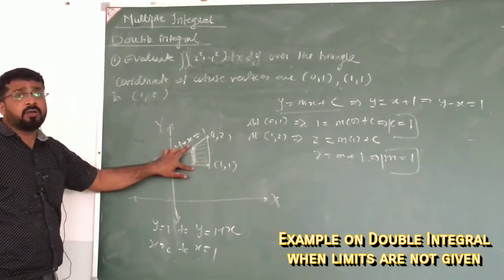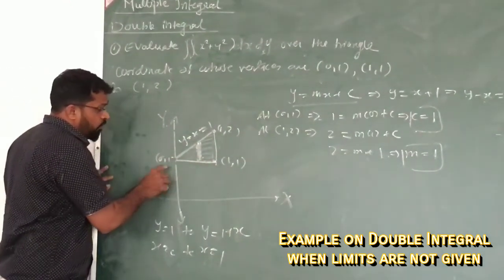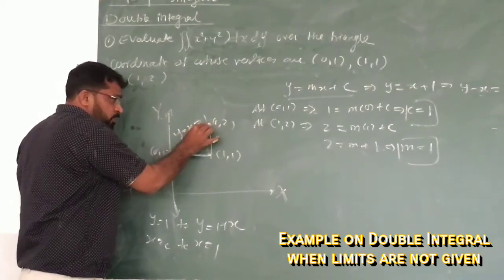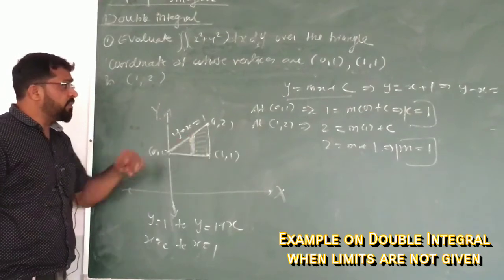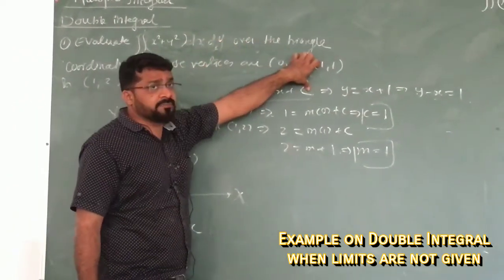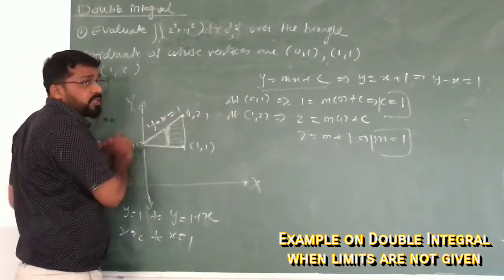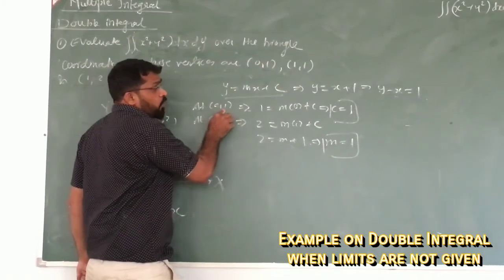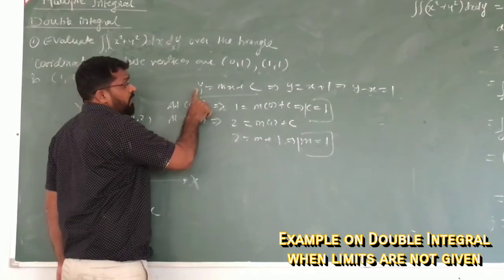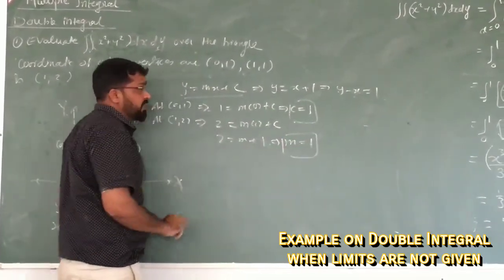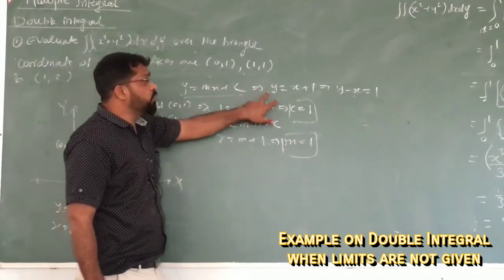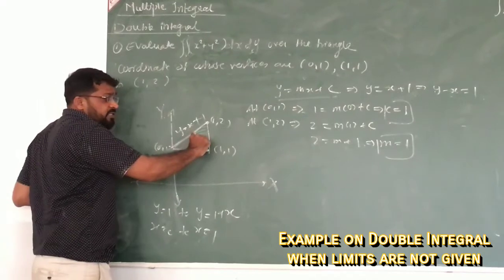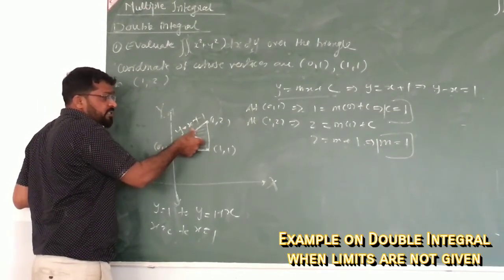The vertical strip gives the limits of y. The lower limit is y equals 1. The upper limit comes from the line passing through (0,1) and (1,2). Using y equals mx plus c and substituting both points, we get m equals 1 and c equals 1, so the line equation is y equals x plus 1. Therefore, y goes from 1 to x plus 1.